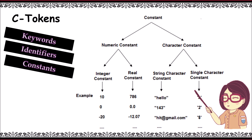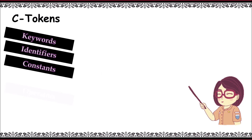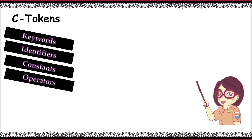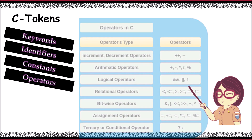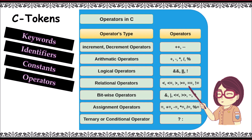Character constants are divided into two categories: string and character. A string is surrounded with double quotes whereas a character is surrounded with single quotes. Next comes operators. C programming language offers various types of operators such as increment/decrement, arithmetic, logical, relational, bitwise, assignment, and ternary or conditional operators. We will have a separate video for these operators.